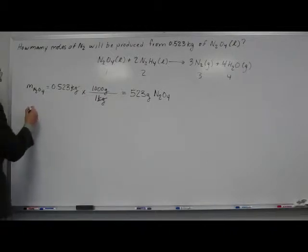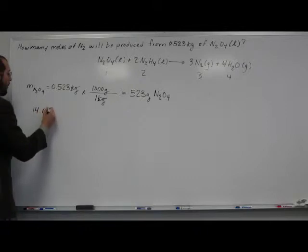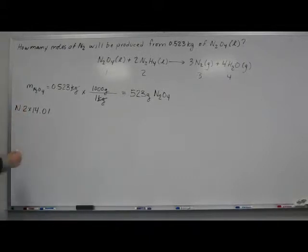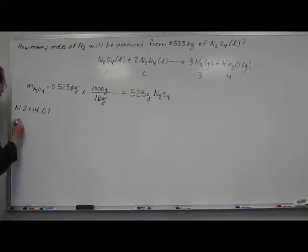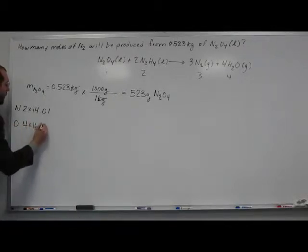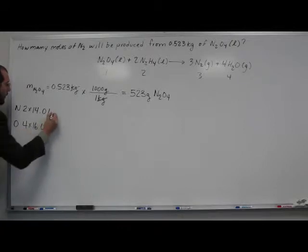So, dinitrogen tetroxide is 14.01 times 2, so we've got 2 nitrogens, right? So 2 times 14.01. Oxygen, we have 4 of them, times 16.00. And both of these are in AMU.